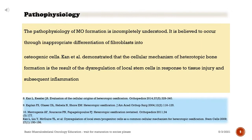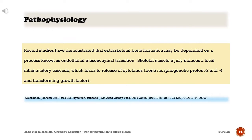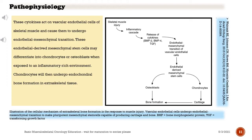The pathophysiology of myositis ossificans formation is incompletely understood. It is believed to occur through inappropriate differentiation of fibroblasts into osteogenic cells. Recent studies have demonstrated that extraskeletal bone formation may be dependent on endothelial mesenchymal transition. Skeletal muscle injury induces a local inflammatory cascade, which leads to release of cytokines — bone morphogenetic protein 2 and 4, and transforming growth factor — which act on vascular endothelial cells, causing them to undergo endothelial mesenchymal transition. These endothelial-derived mesenchymal stem cells may differentiate into chondrocytes or osteoblasts in an inflammatory-rich environment. Chondrocytes will then undergo endochondral bone formation in extraskeletal tissue.